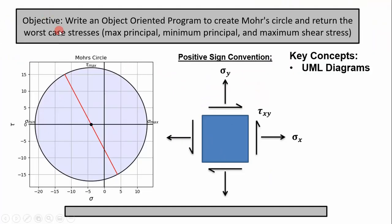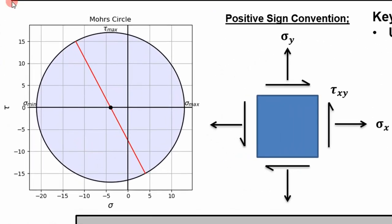Today, we're going to write an object-oriented program to create Mohr's Circle and return the worst-case stresses, which include the max principal, minimum principal, and maximum shear stress. This is an example of Mohr's Circle that we're going to output with the program. You have shear stress plotted against normal stress. The important pieces of information from this graph are the worst-case stresses: the minimum principal stress, the maximum principal stress, and the maximum shear stress.